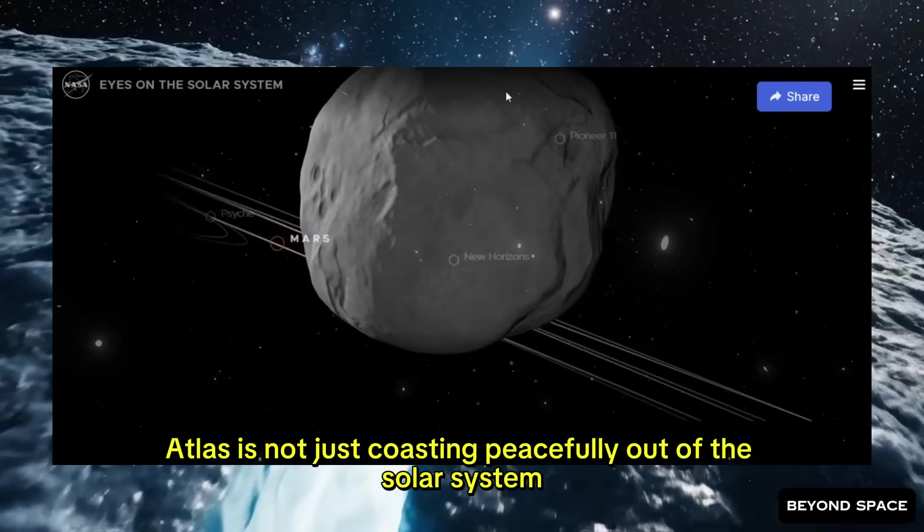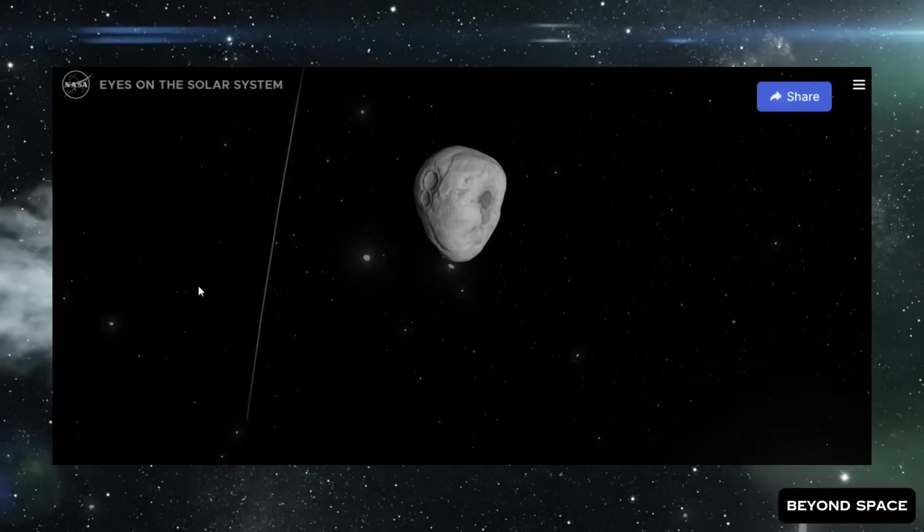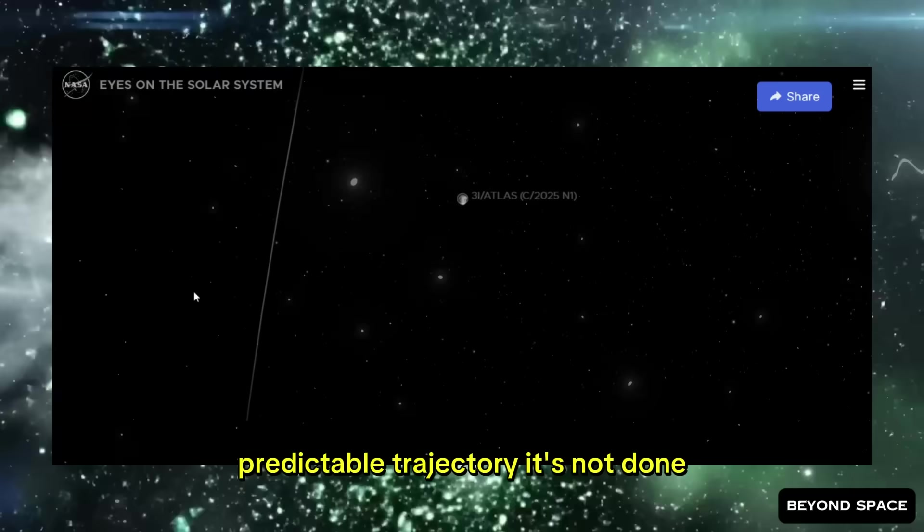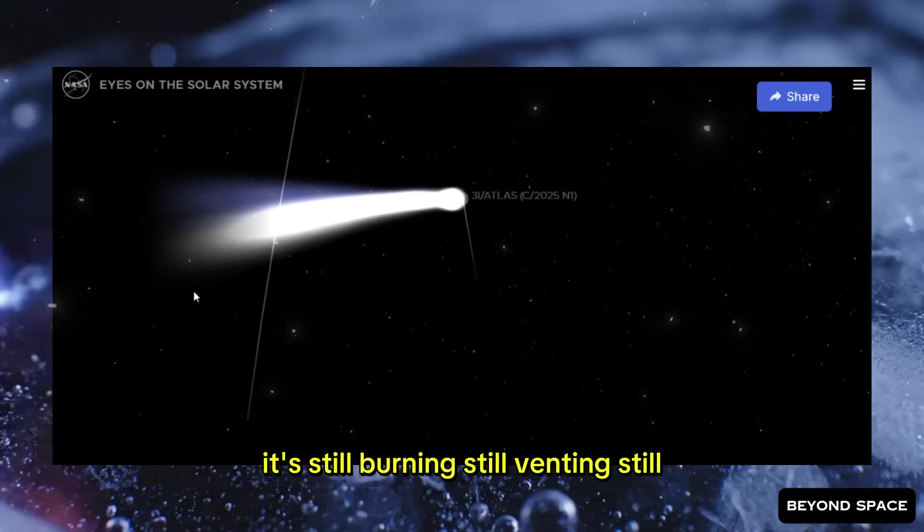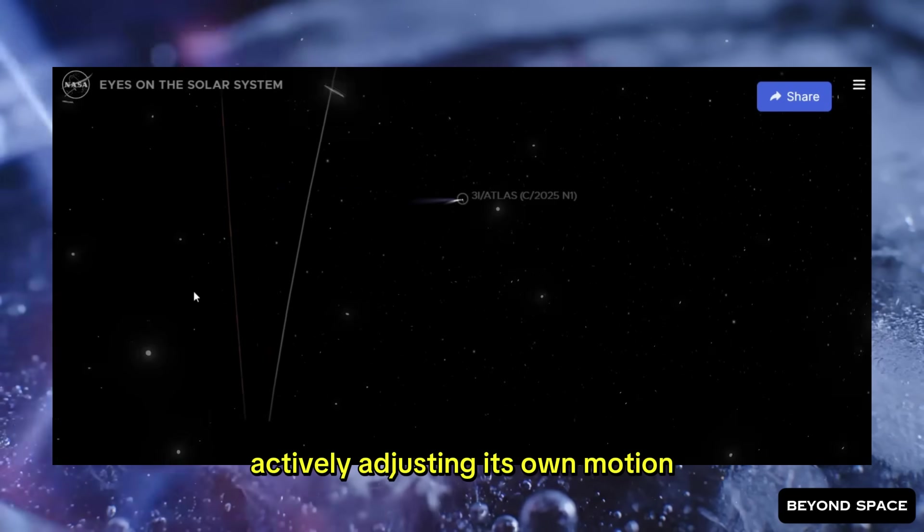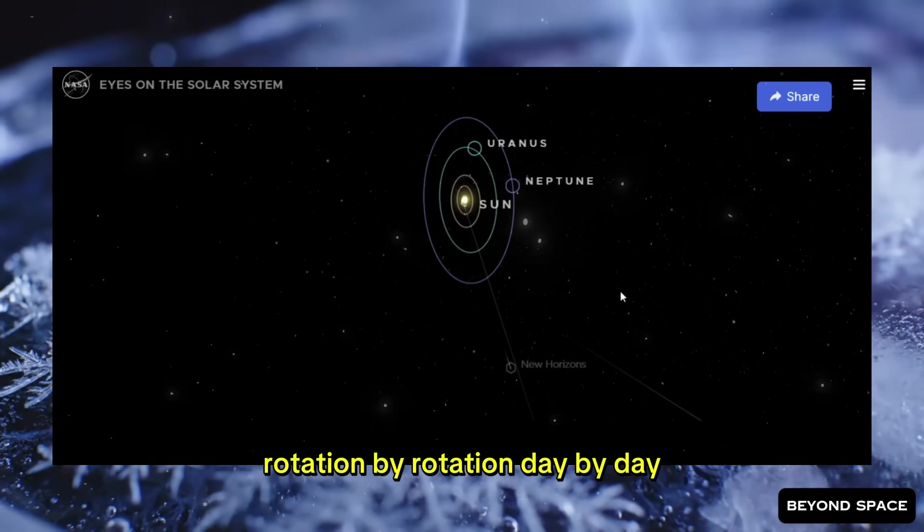So what's the bottom line here? The bottom line is that 3i Atlas is not just coasting peacefully out of the solar system on some fixed, predictable trajectory. It's not done. It's still burning. Still venting. Still actively adjusting its own motion layer by layer. Vent by vent. Rotation by rotation. Day by day. Yesterday's shift wasn't the final word. Today it shifted again.